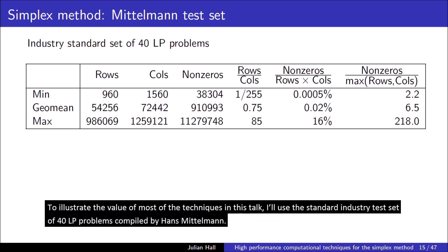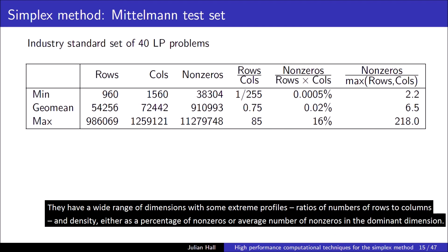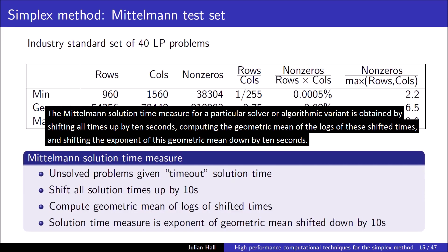To illustrate the value of most of the techniques in this talk, I'll use the standard industry test set of 40 LP problems compiled by Hans Mittelman. They have a wide range of dimensions with some extreme profile ratios of numbers of rows to columns and density, either as a percentage of non-zeros or average number of non-zeros in the dominant dimension. The Mittelman solution time measure for a particular solver or algorithmic variant is obtained by shifting all times up by 10 seconds, computing the geometric mean of the logs of these shifted times, and shifting the exponent of this geometric mean down by 10 seconds.